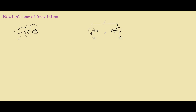What Newton found was that the force of gravity between two objects — Fg — is directly proportional to the product of the masses, and inversely proportional to the square of the distance between them. So in equation terms, this is M1 times M2 divided by R squared. He also found that there was a gravitational constant G. So this is Newton's law of gravitation.